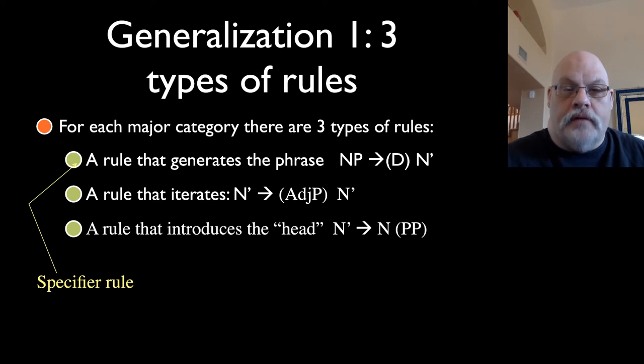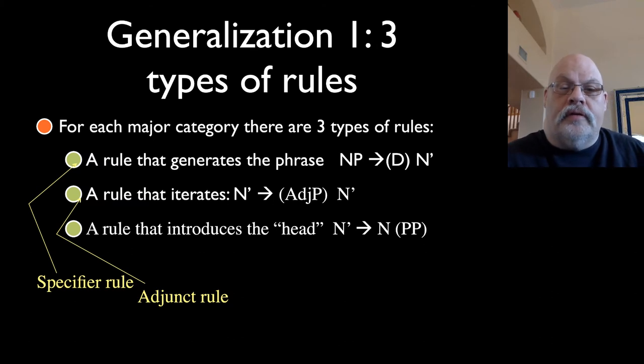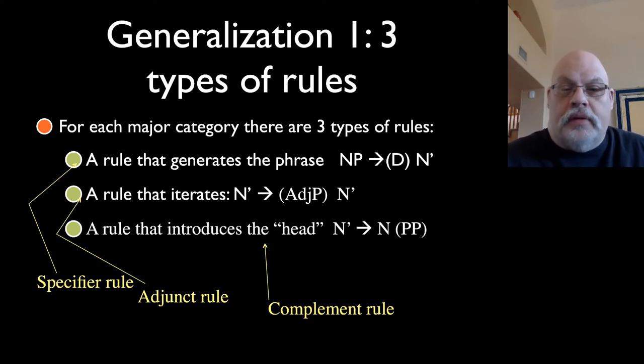We have names for each of these rules. The rule on top is called the specifier rule, and the determiner is the specifier. The second rule is called the adjunct rule, which introduces optional modifiers like the adjective phrase or prepositional phrase. And then finally, we have the complement rule. The complement rule introduces the head into the tree and has one element, which we call the complement. And in the rule you're looking at now, it's the prepositional phrase. In a verb phrase rule, it would be the direct object. So those are our three rules: the specifier rule, the adjunct rule, and the complement rule.